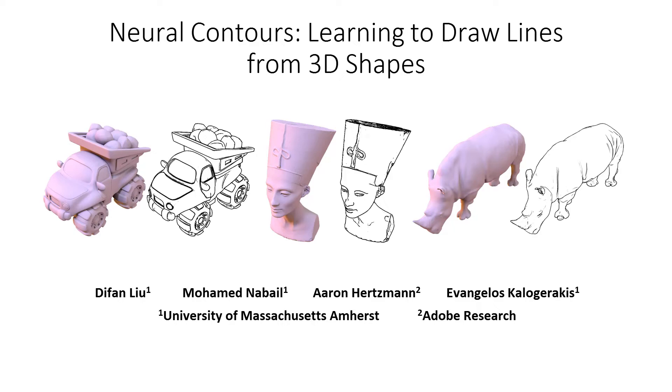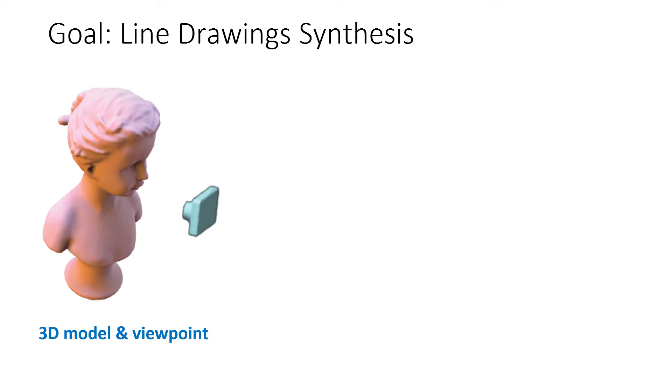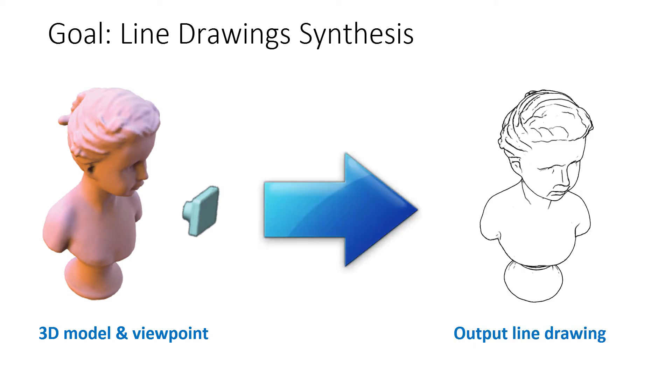We present Neural Contours, a method for learning to create lines for 3D shapes. Given an input 3D model and a viewpoint, we designed a deep architecture to produce a line drawing conveying its shape.